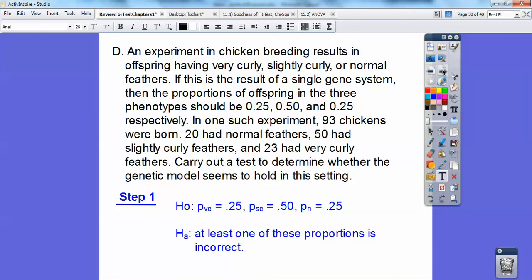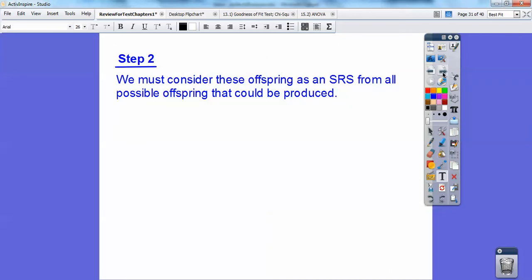So step one, I know hypotheses is there's no change. So the proportion of very curly still is 25%. The proportion of slightly curly is 50%. The proportion of normal feathers is 25%. So your alternative hypothesis is at least one of these proportions is incorrect. So we must consider these offspring as an SRS from all the possible offsprings that can be produced if we're going to do any kind of calculations on this.